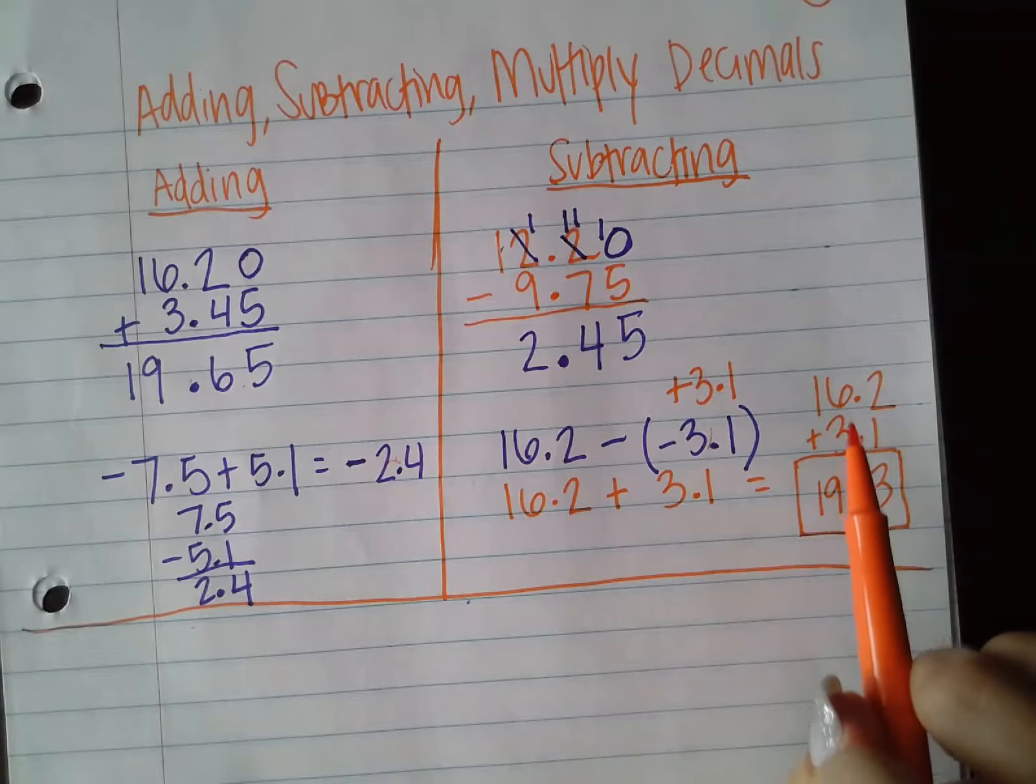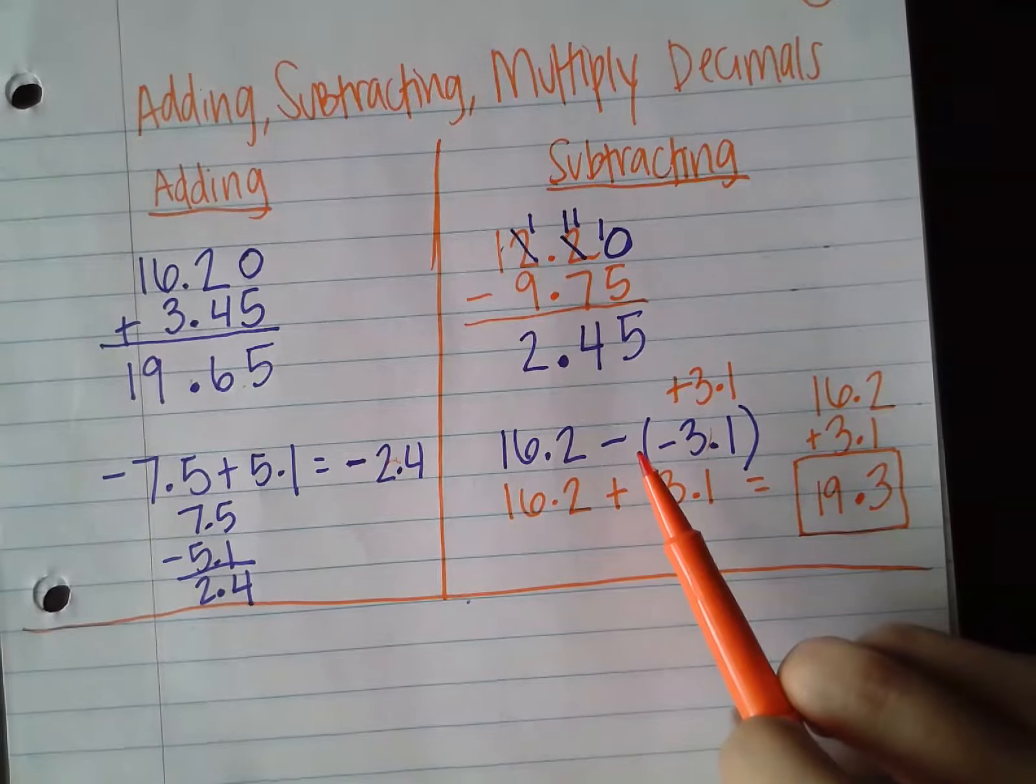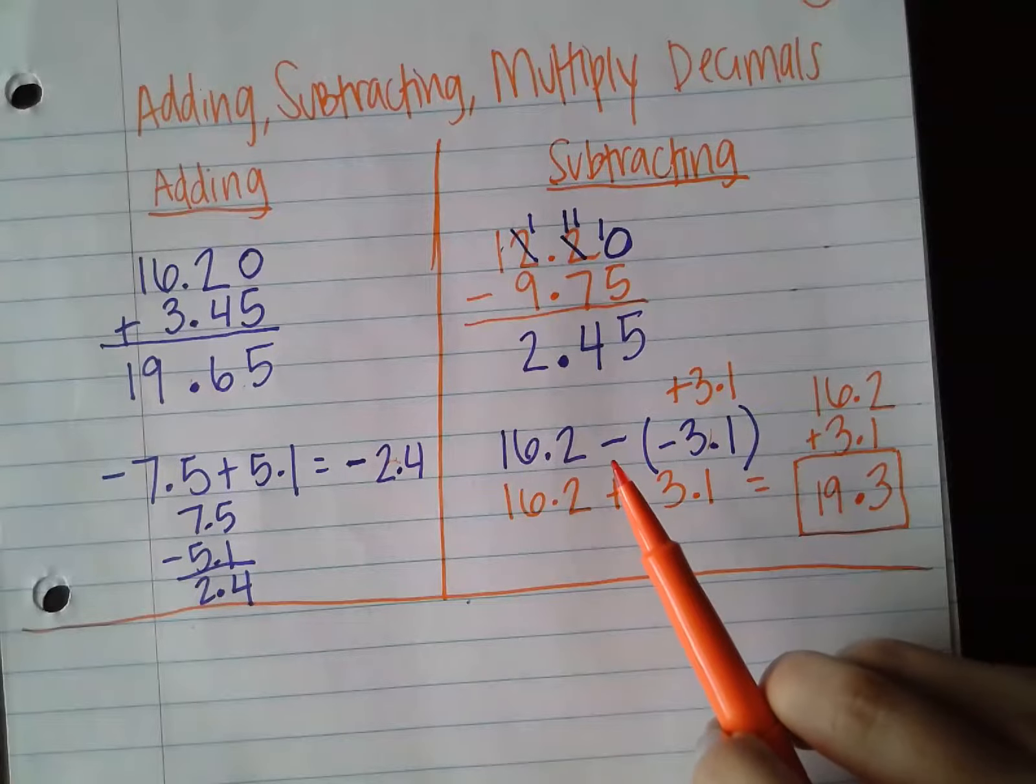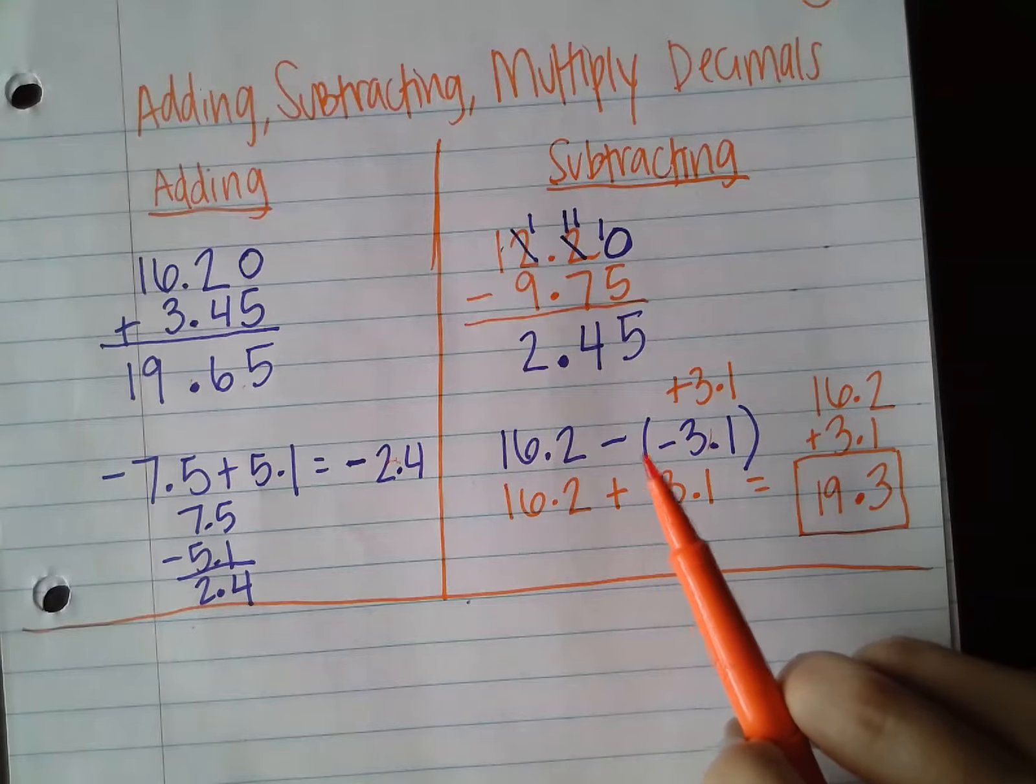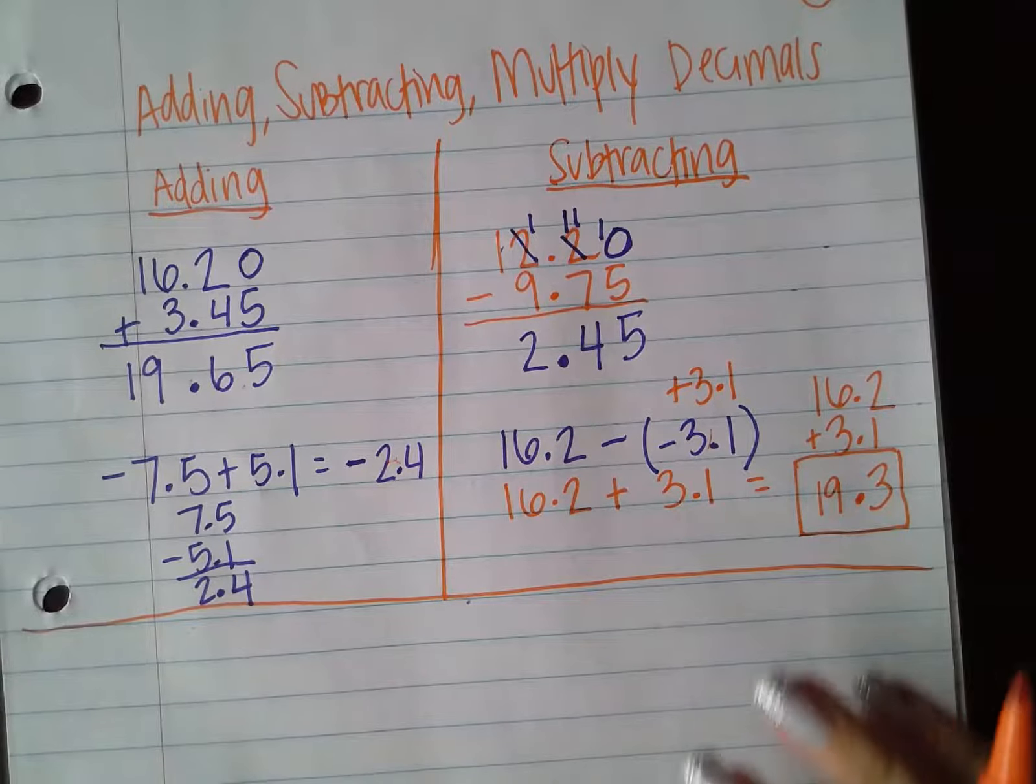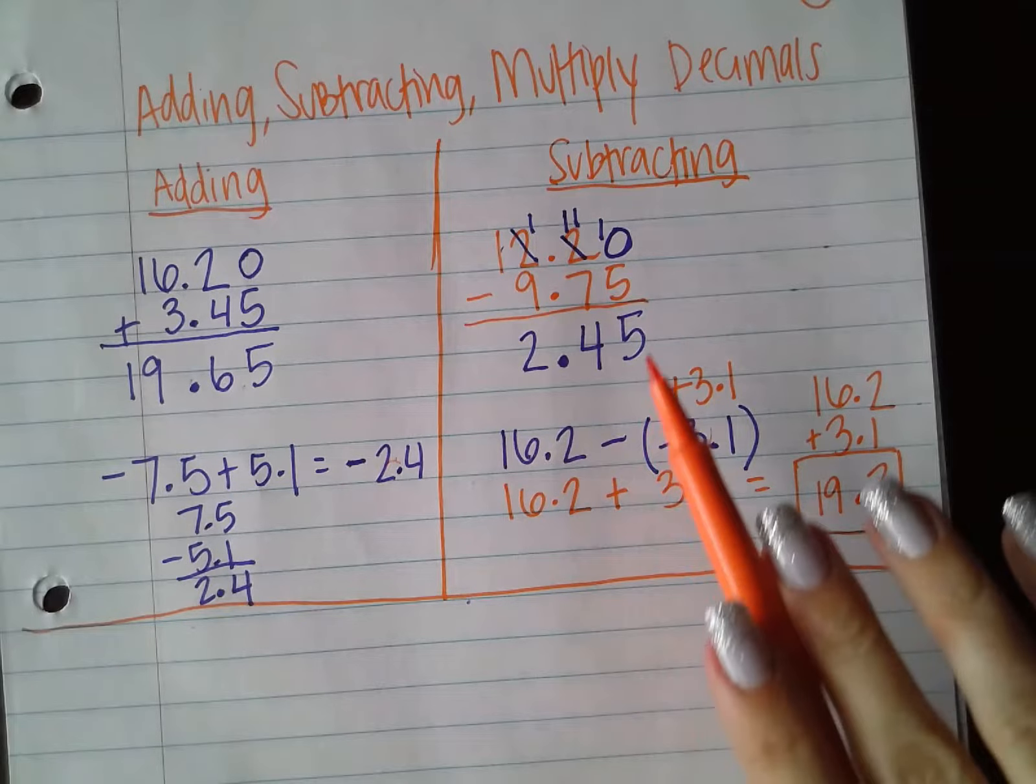And if you're a little bit confused about why I didn't subtract those two numbers, I encourage you to go back and look at your integer subtraction notes that we've done where we model on a number line why we subtract negatives. So this is just an example of subtraction.